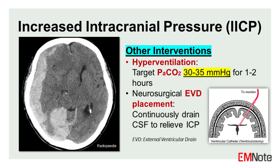Other interventions — Hyperventilation: controlled hyperventilation to achieve a target PaCO2 of 30 to 35 mmHg for a maximum of 1 to 2 hours can be employed as a temporary measure to reduce ICP. This intervention decreases cerebral blood flow and intracranial blood volume by causing cerebral vasoconstriction.